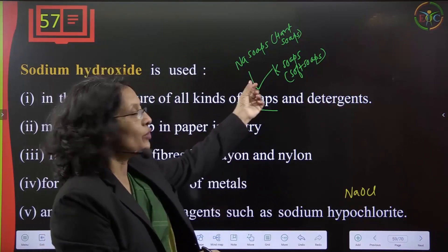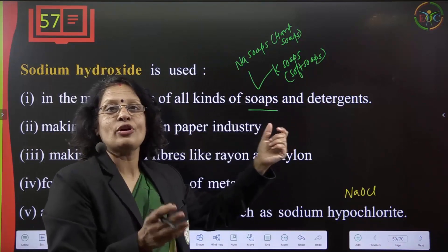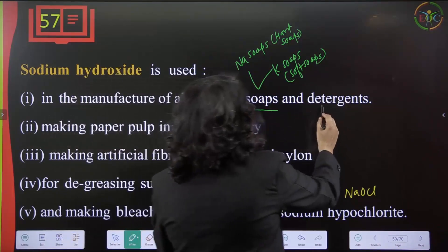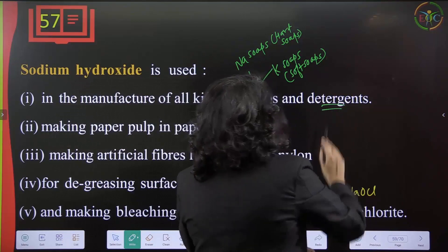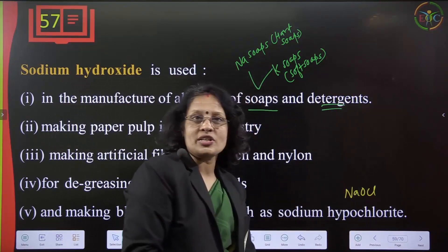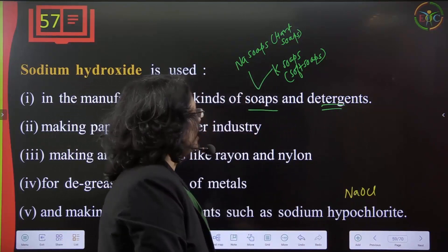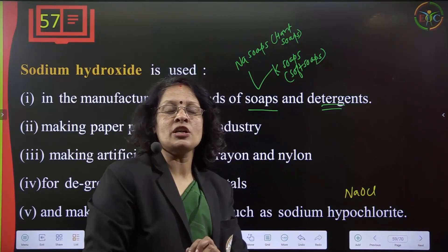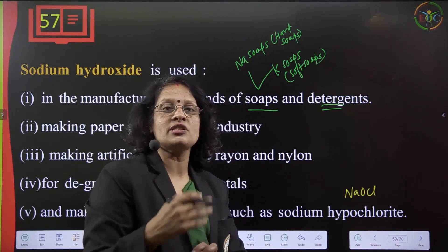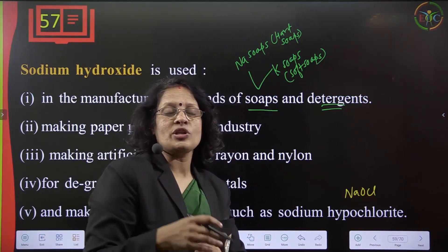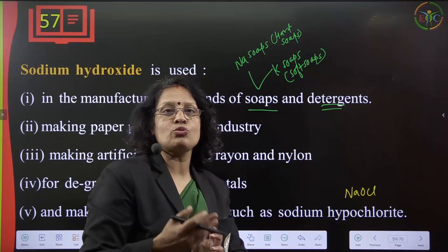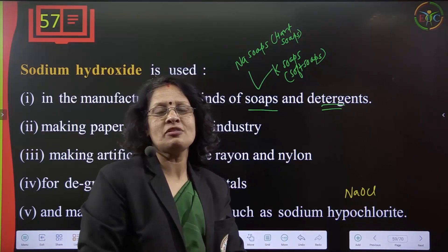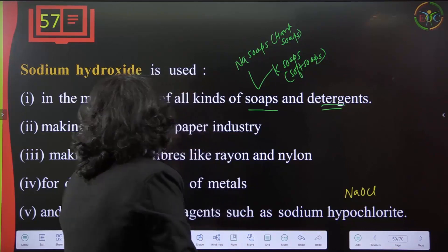Potassium soaps are soft for the body and skin. Detergents are also used for washing and can be used for washing floors, surfaces, glass, wood, or fabric.